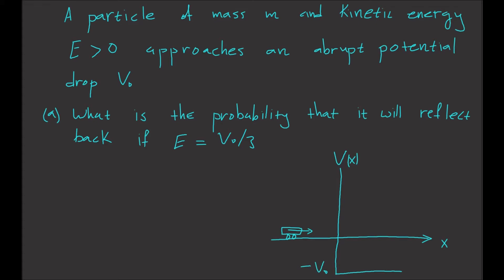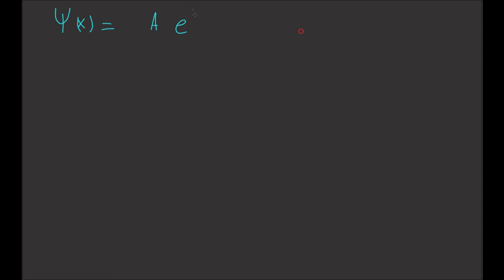The question is: what is the probability that it will reflect back if the kinetic energy is equal to the potential energy divided by 3? As usual, we solve the Schrödinger equation. The solution for psi for X greater than zero is: psi(X) = A·e^(iKX) + B·e^(-iKX).